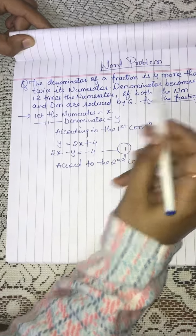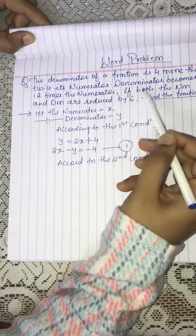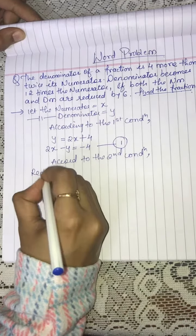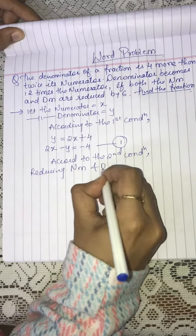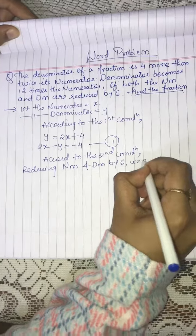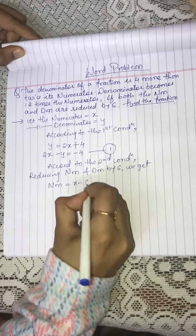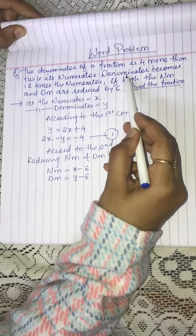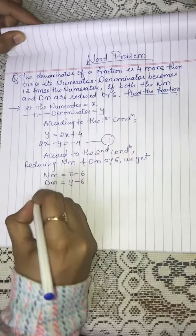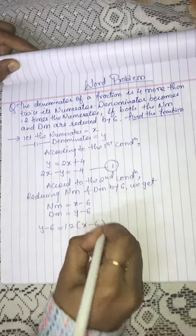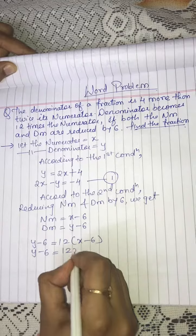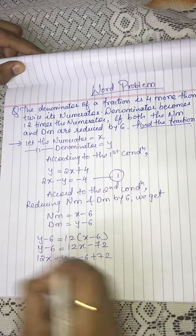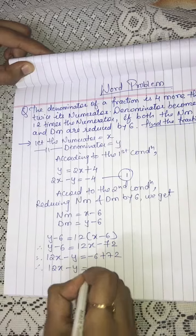According to the second condition: the denominator becomes 12 times the numerator. Since both numerator and denominator are reduced by 6, the new numerator is x minus 6 and the new denominator is y minus 6. So the equation becomes: y minus 6 is equal to 12 into x minus 6, which gives y minus 6 equals 12x minus 72. Arranging: 12x minus y is equal to 66, which is our equation number 2.